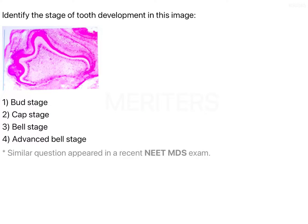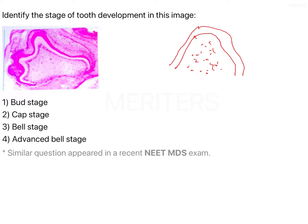Identify the stage of tooth development in this image. What we're seeing is a growth with a layer and another layer inside, and a very loose connective tissue with a lot of cells. You have cells which are arranged in a columnar fashion. Then you have something eosinophilic over here — eosinophilic is pink — and then you can see another eosinophilic layer.